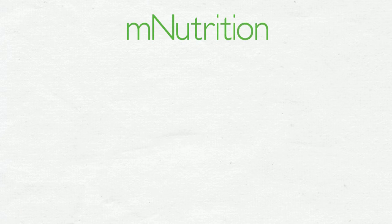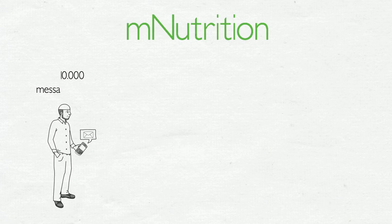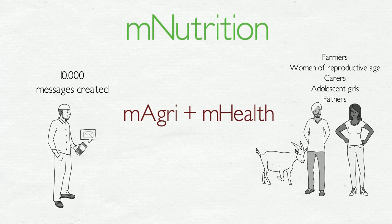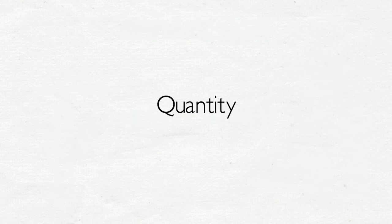Since the beginning of the project in 2014, the mNutrition content team created 10,000 text and voice messages for mobile operators to send to farmers and others who expressed interest in receiving tips on agriculture, health, and nutrition.